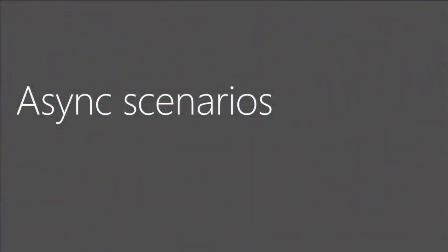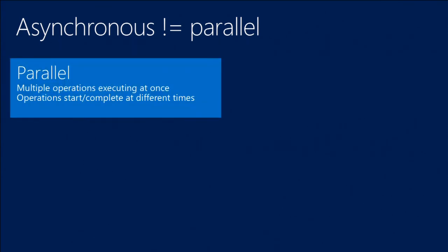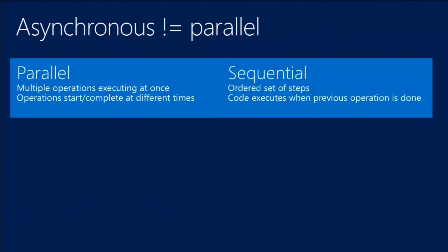That brings us to async scenarios and some analogies. The first thing to address is that asynchronous and parallel are related but not identical concepts, and they often get confused. Parallel programming is where you have multiple things happening at the same time — multiple threads all executing something. Sequential is like traditional code, where you have an ordered sequence of steps. Asynchronous, in the context we're talking about today, is basically where your thread is not blocked when there is no work to do — versus synchronous, where the thread is blocked until execution is complete.